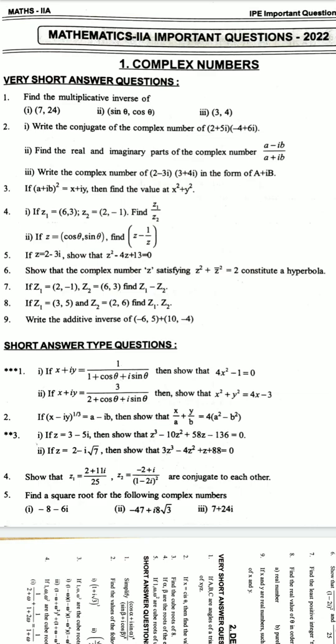Show that z1 equals 2 plus 11i by 25, z2 equals minus 2 plus i by 1 minus 2i whole square are conjugate to each other.